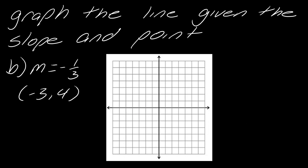Let's do another one together. My slope is negative one third and I'm starting at the point negative three, four. So I start at the origin and go to negative three on the x-axis, then up four. Now remember: negative means down, and this time I've got a fraction — negative one third means I go down one and then to the right three.